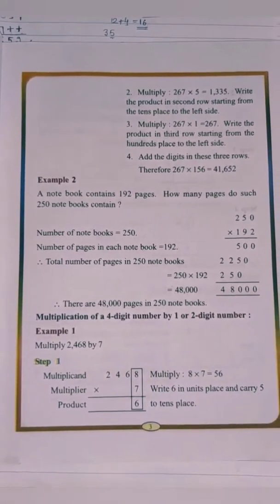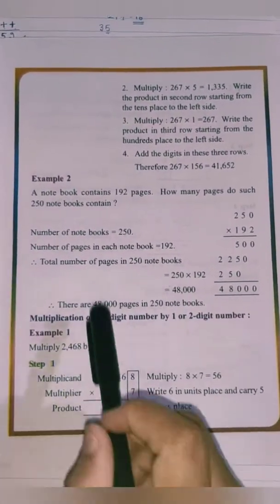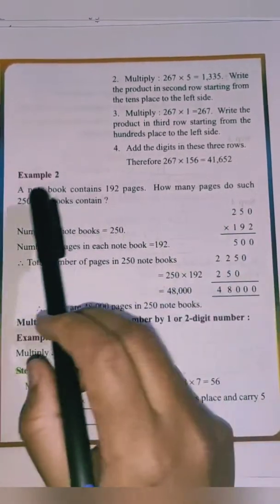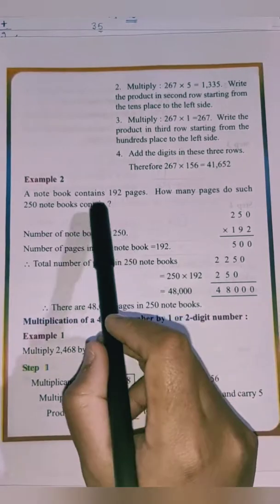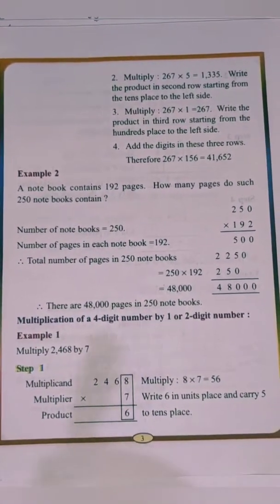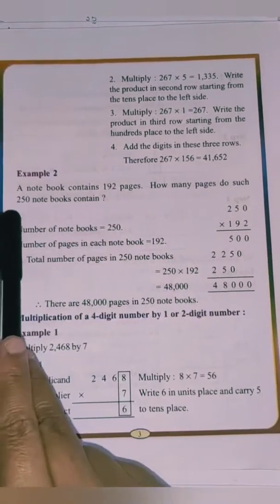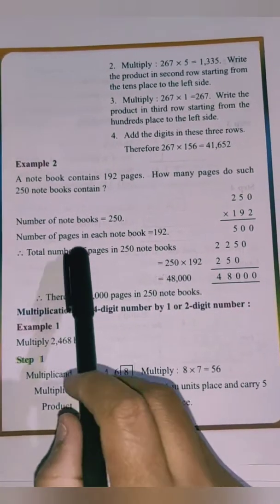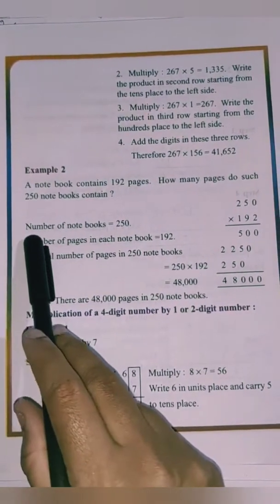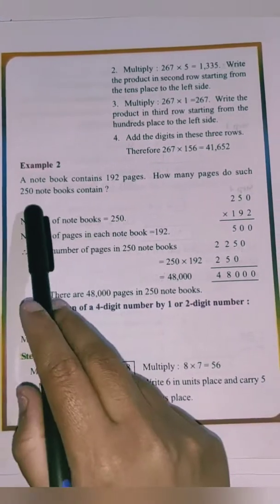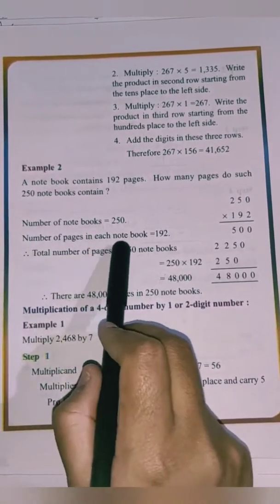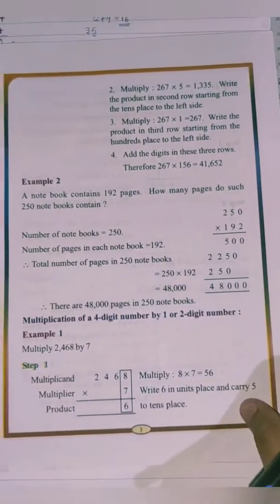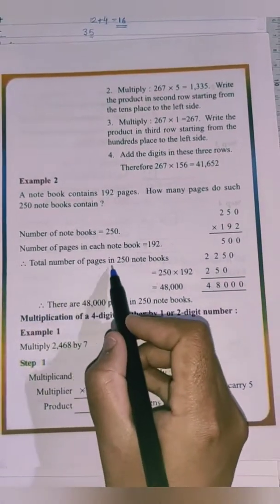Today we'll start with another example — Example 2, which is on page number 3. A notebook contains 192 pages. How many pages do 250 such notebooks contain? So a single notebook contains 192 pages and you have to find out how many pages 250 notebooks contain. Number of notebooks is 250, and number of pages in each notebook is 192.